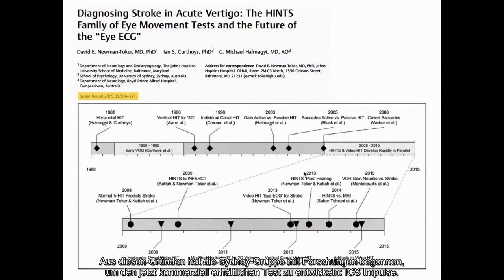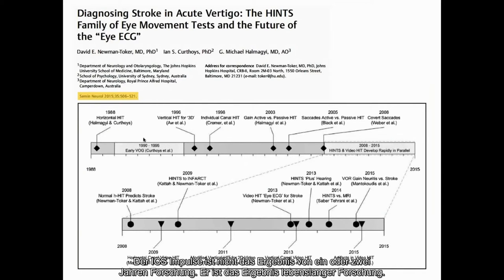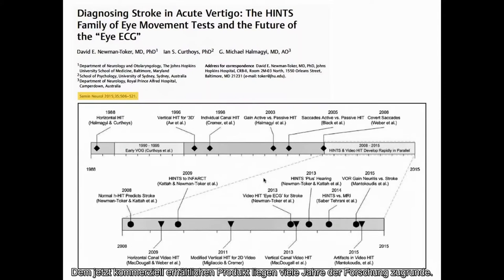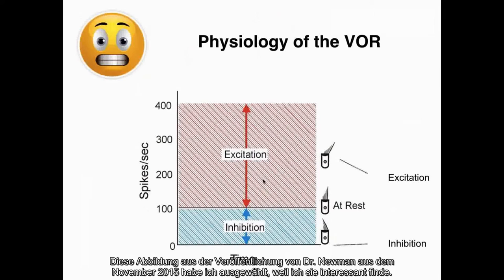For those reasons, the Sydney Group started research to develop what we now have commercially available — the ICS Impulse. When we look at the ICS Impulse, it's not one or two years of research; it's a lifetime of research. There's a picture from Dr. Halmagyi showing all the different prototype video head impulse tests. Early prototypes tried using two cameras and became too heavy. Many, many years of research went into achieving what we have commercially available right now.